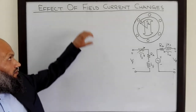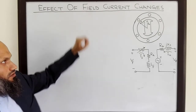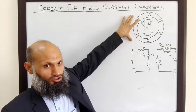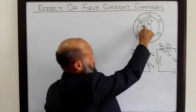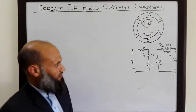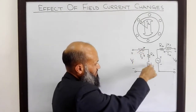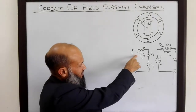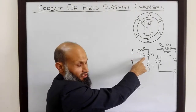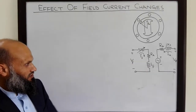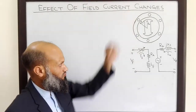In this part of the lecture, we shall study the effects of changes in the field current on the working of a synchronous motor. Field windings in case of synchronous motor are on the rotor circuit and generally they have an additional variable resistor in series with field windings. This additional variable resistor helps us get control on the field current.